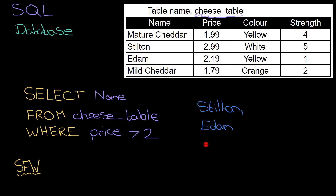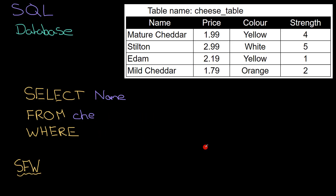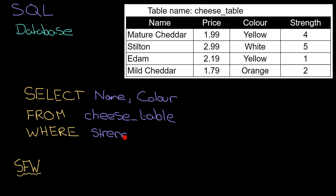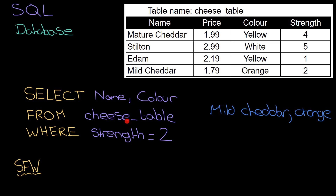If I do that I'd expect to see Stilton because that's £2.99, and Edam because that's £2.19 — they're both greater than two. Now let's see what happens if we start fiddling with some of these conditions. Instead of SELECT name FROM cheese_table WHERE price, let's do SELECT name and color — so I want two bits of information — name, comma, color FROM cheese_table WHERE strength equals 2. That will get me one result: mild cheddar, along with its color which is orange.